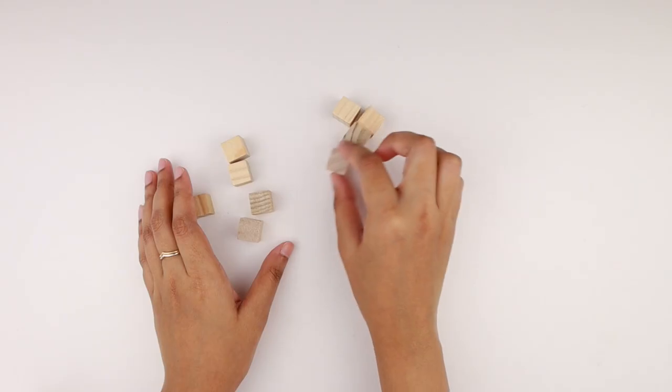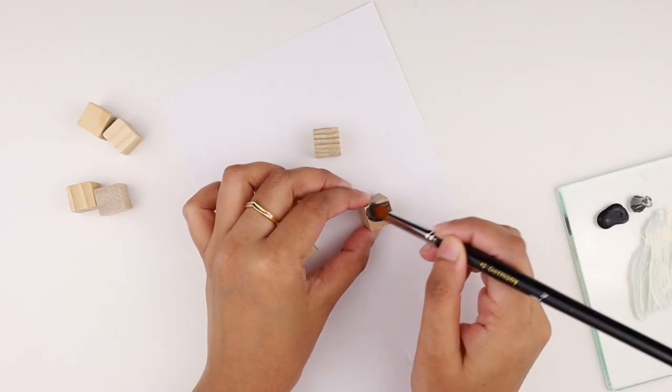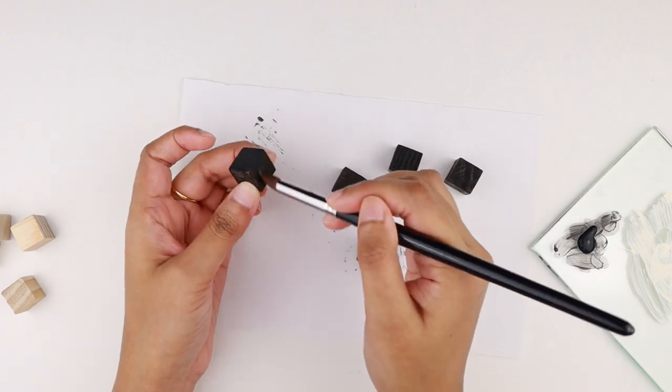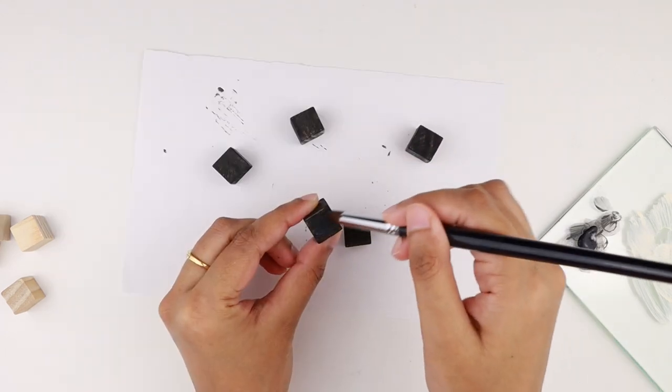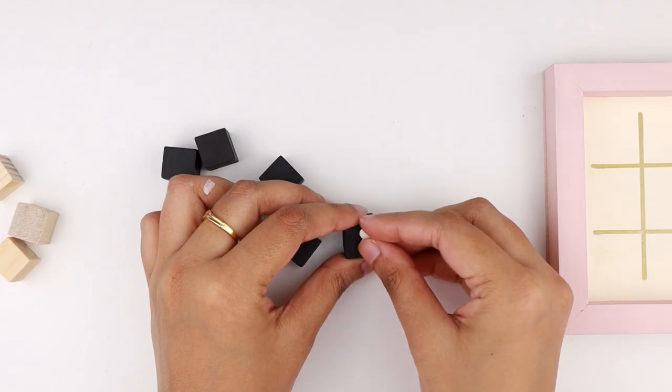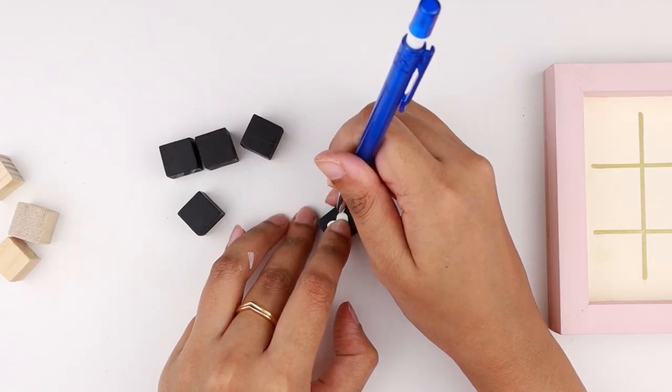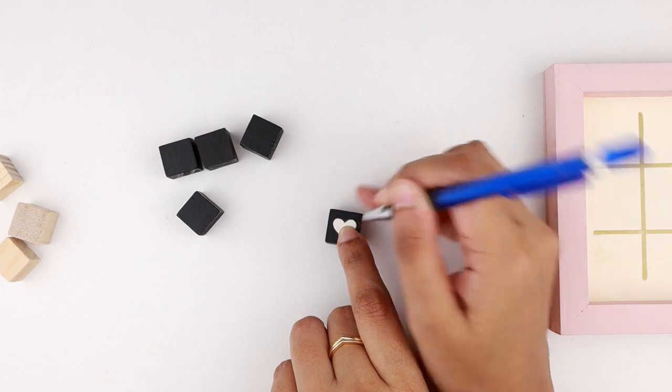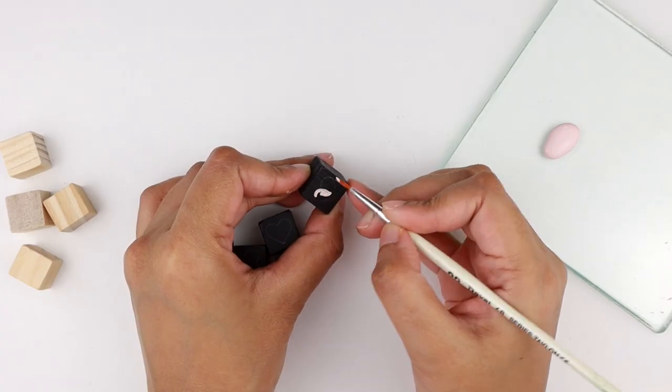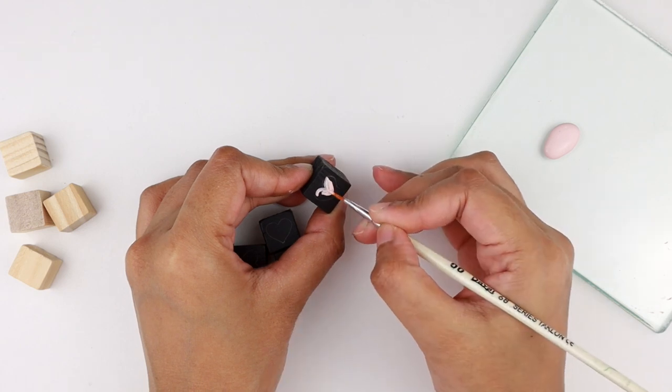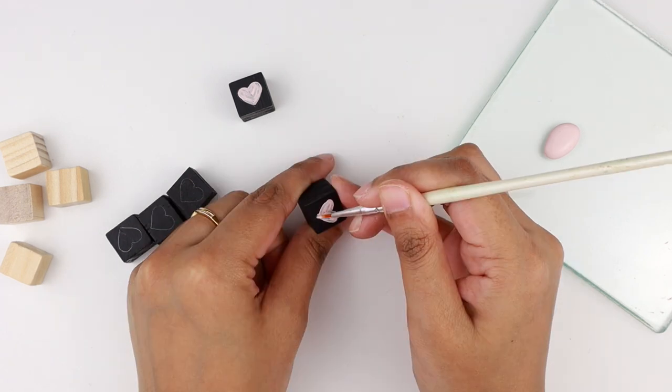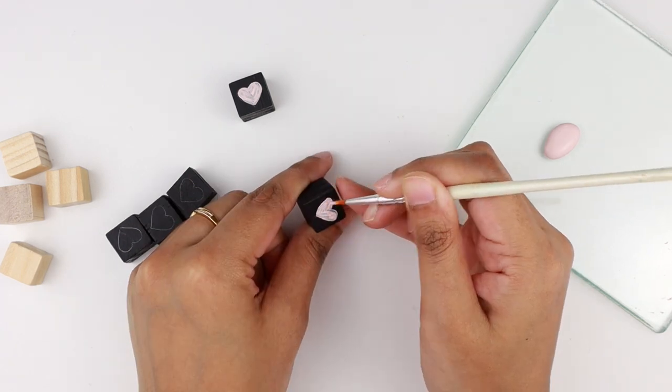I grabbed nine small wood cubes and started to paint five of these with black acrylic paint. I painted all the sides of the cube. I went for at least two coats to make the paint look opaque. Then I cut out a tiny paper heart, placed it on the center, and traced the shape onto the cube. To fill in the shape, I used the same powder pink paint. This way I continued to paint little pink hearts on the remaining four pieces.